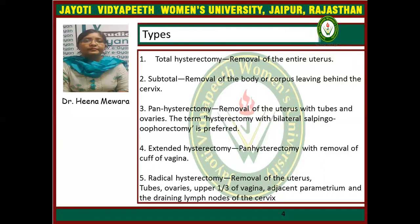When pan hysterectomy with removal of the cuff of vagina is done, it is called extended hysterectomy. In radical hysterectomy, the uterus is removed with tube, ovary, and upper one-third of vagina with adjacent parametrium and the draining lymph nodes of the cervix.